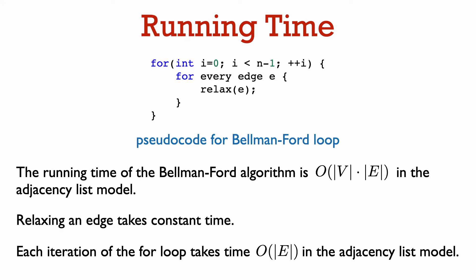It's also easy to see the running time of the Bellman-Ford algorithm. Relaxing an edge just takes constant time. So in the adjacency list model, we can do each iteration of the for loop in time order of the number of edges. Since we do order the number of vertices many iterations of the for loop, the overall running time is order the number of vertices times the number of edges.